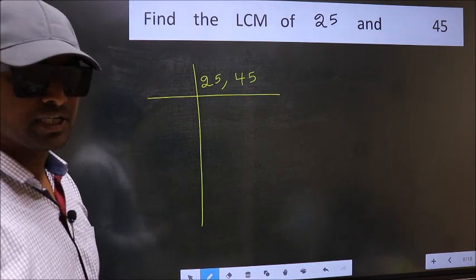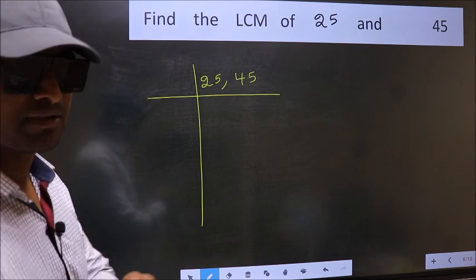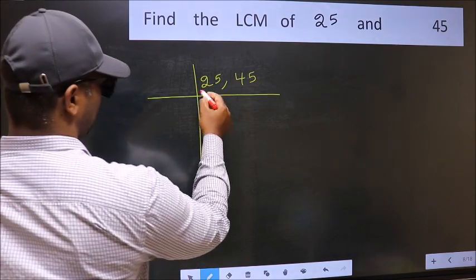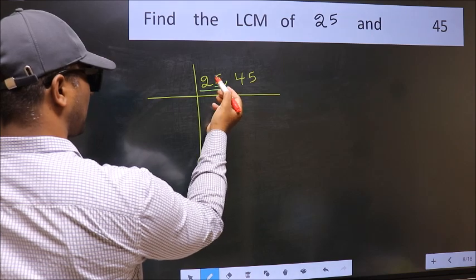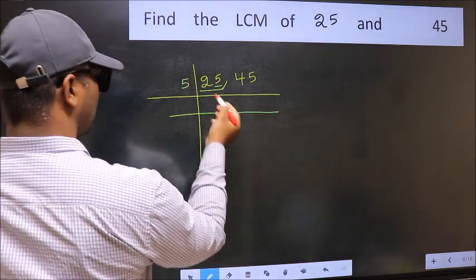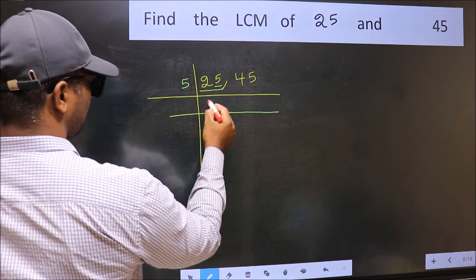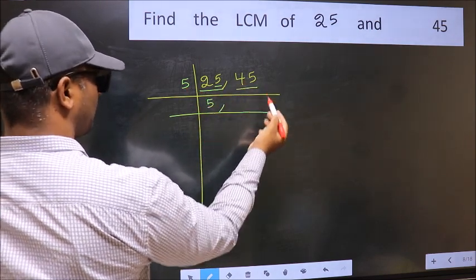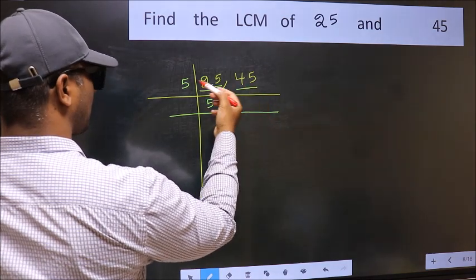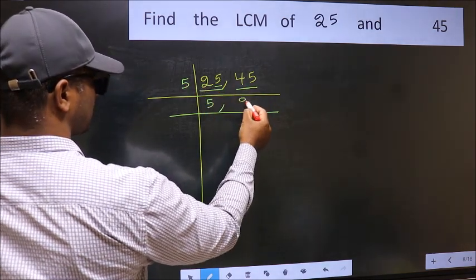Now, you should focus on the first number, which is 25. In this number, the last digit is 5, so take 5. When do we get 25 in the 5 table? 5 times 5 is 25. The other number, 45. When do we get 45 in the 5 table? 5 times 9 is 45.